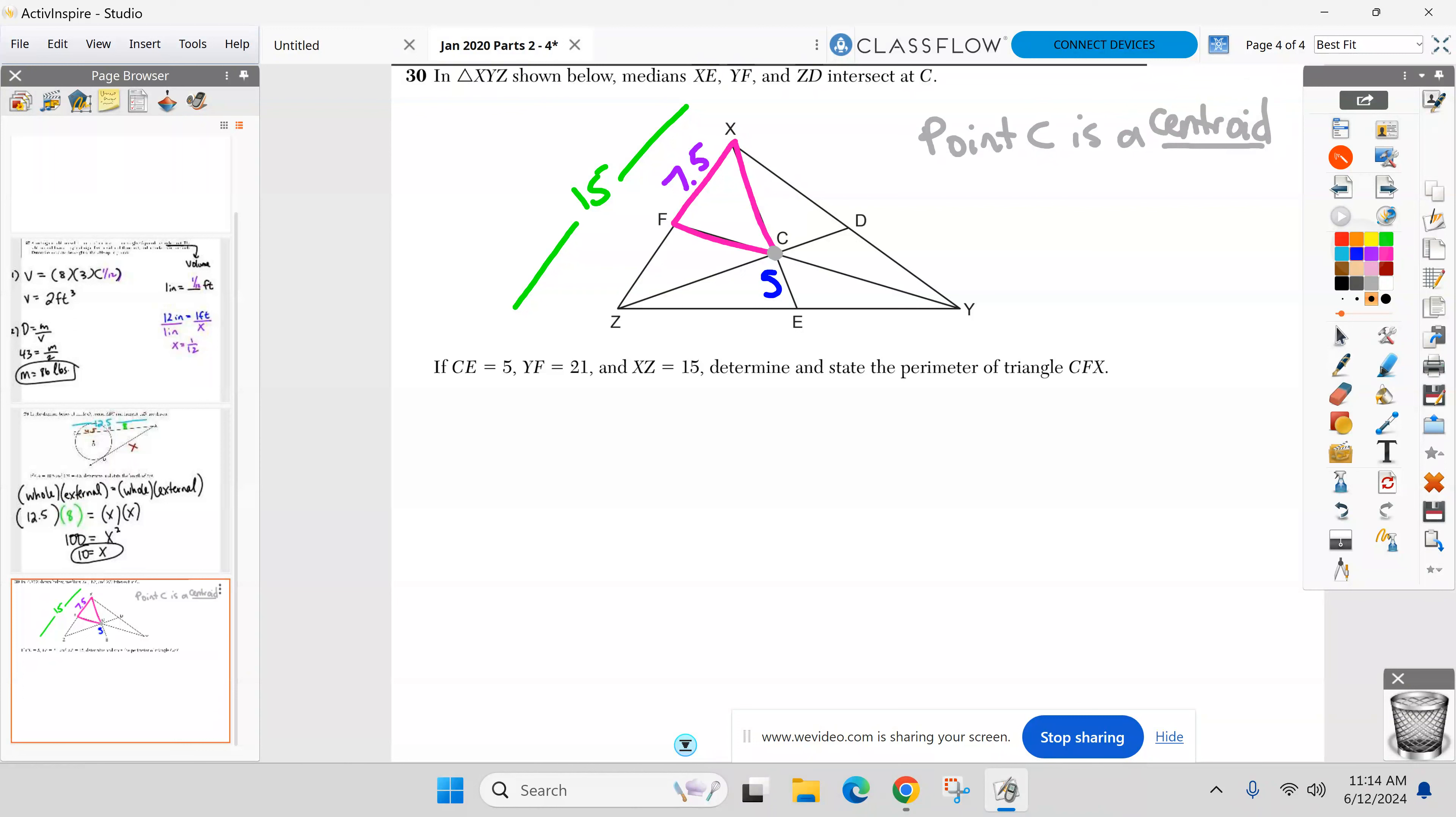So one piece of the median is double the other. So I have CE is 5. That tells me XC has got to be double that, 10. And how do I always know which one's the bigger piece other than because it looks like it? The bigger piece is always from the vertex to the centroid. All right. The bigger piece is always from the vertex to the centroid. So it looks like we have only one piece left to find the perimeter, which is FC.